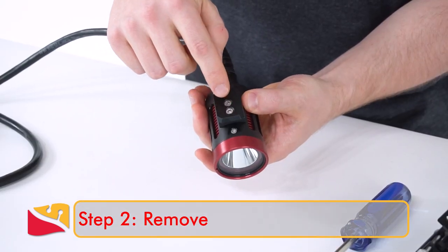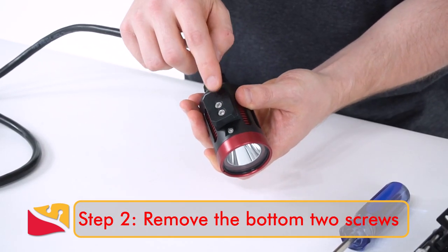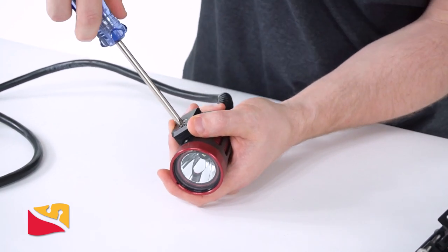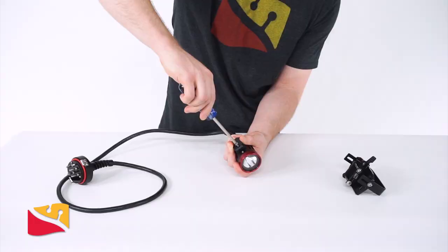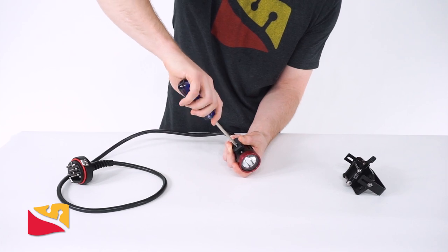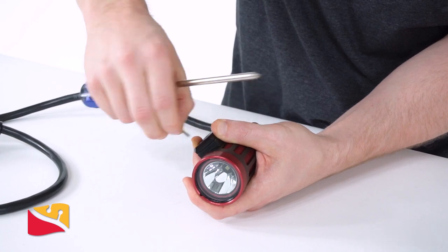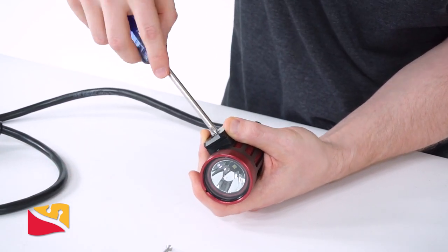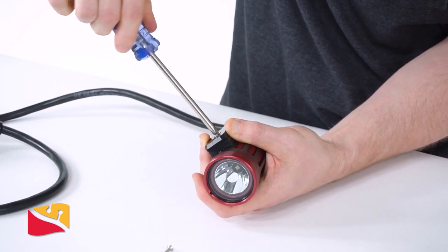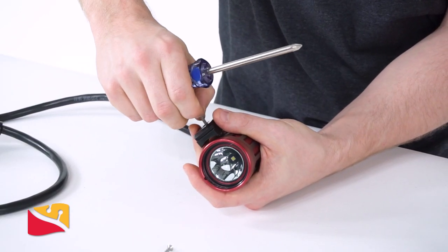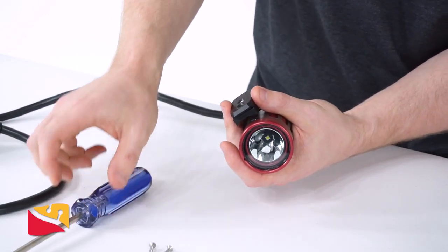Next, we are going to remove the two screws that are holding on the QRM striker. Set the screws and striker assembly aside.